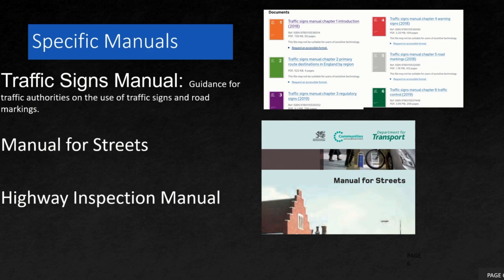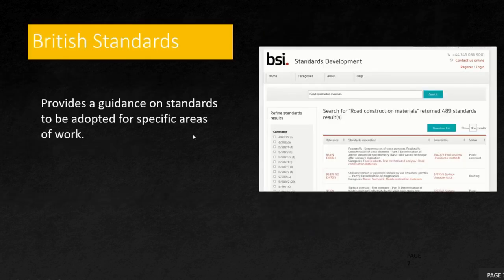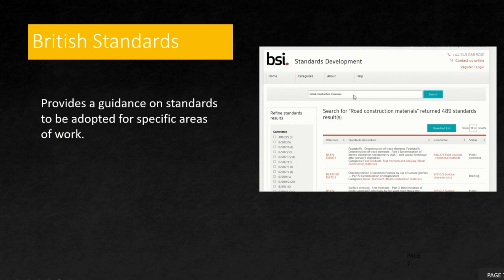The last reference is British Standards. Similar to Indian Standards, BS provides guidance and standards for specific areas of work, especially material-related ones — what type of material and what strength standards must be maintained for steel, concrete, and so on. For example, there are BS standards for surface characteristics and surface profiles such as megatexture.